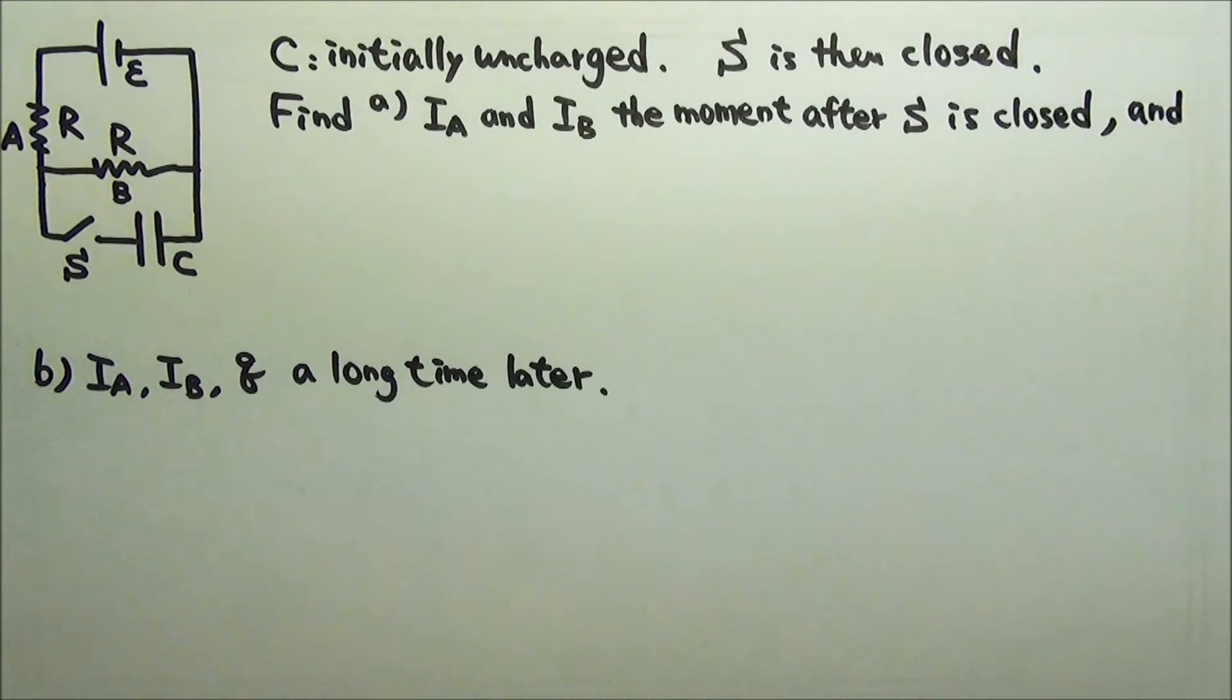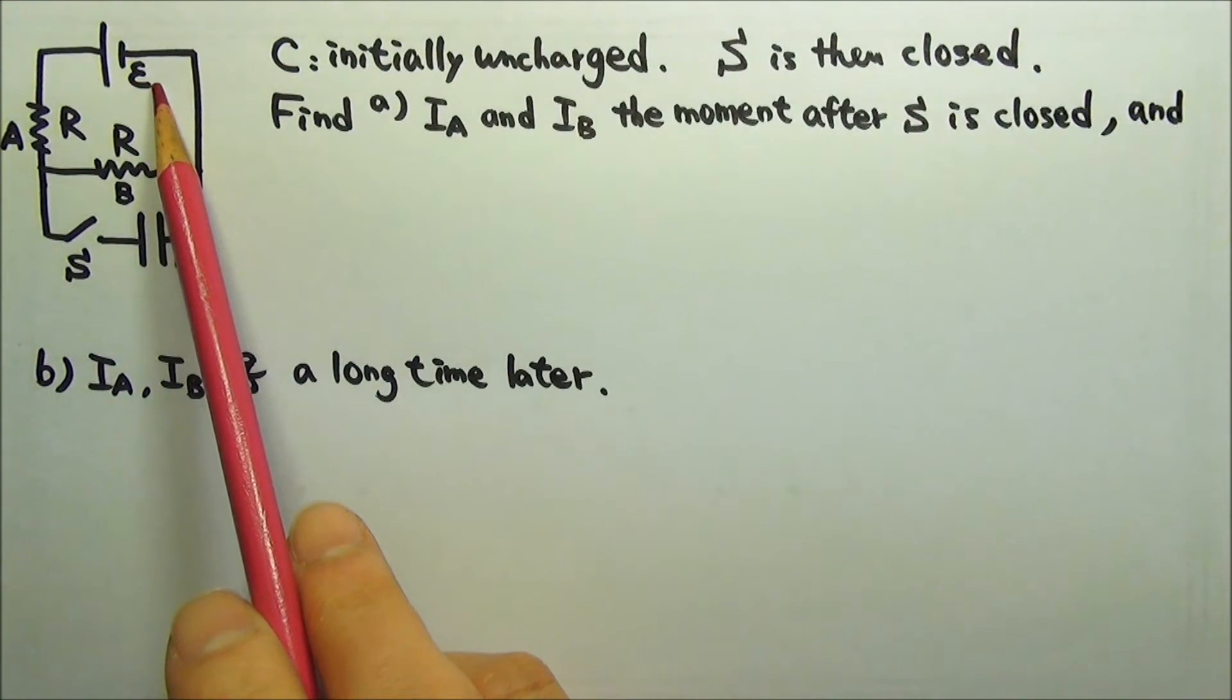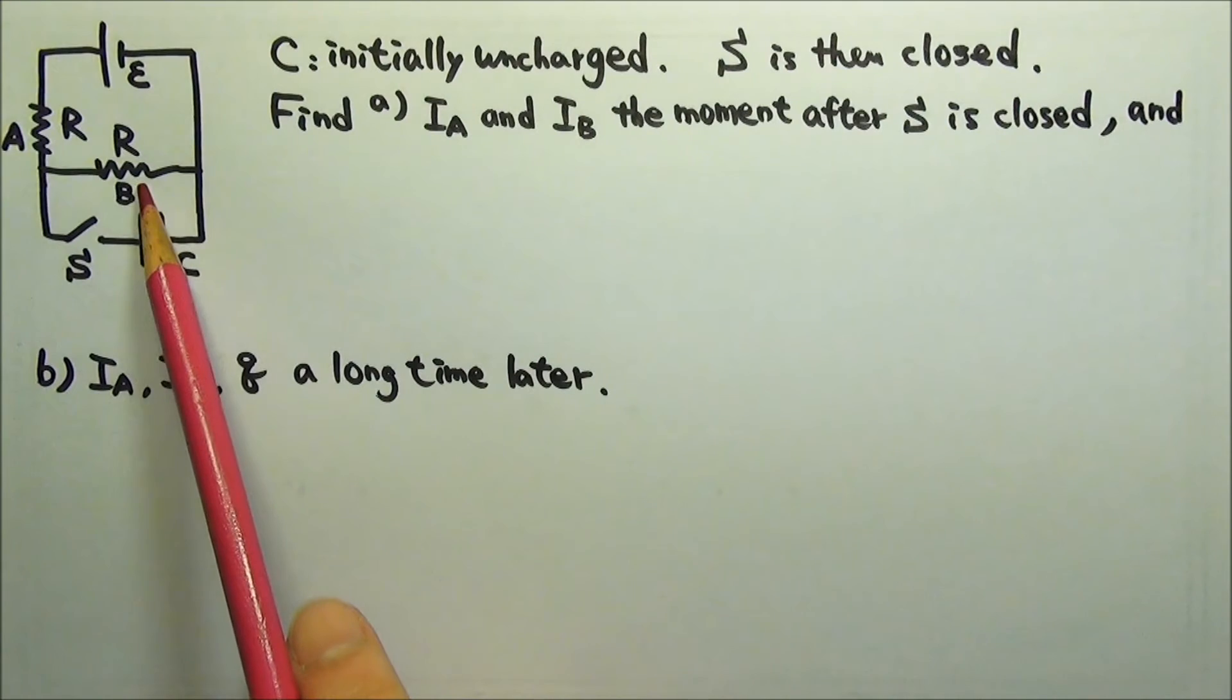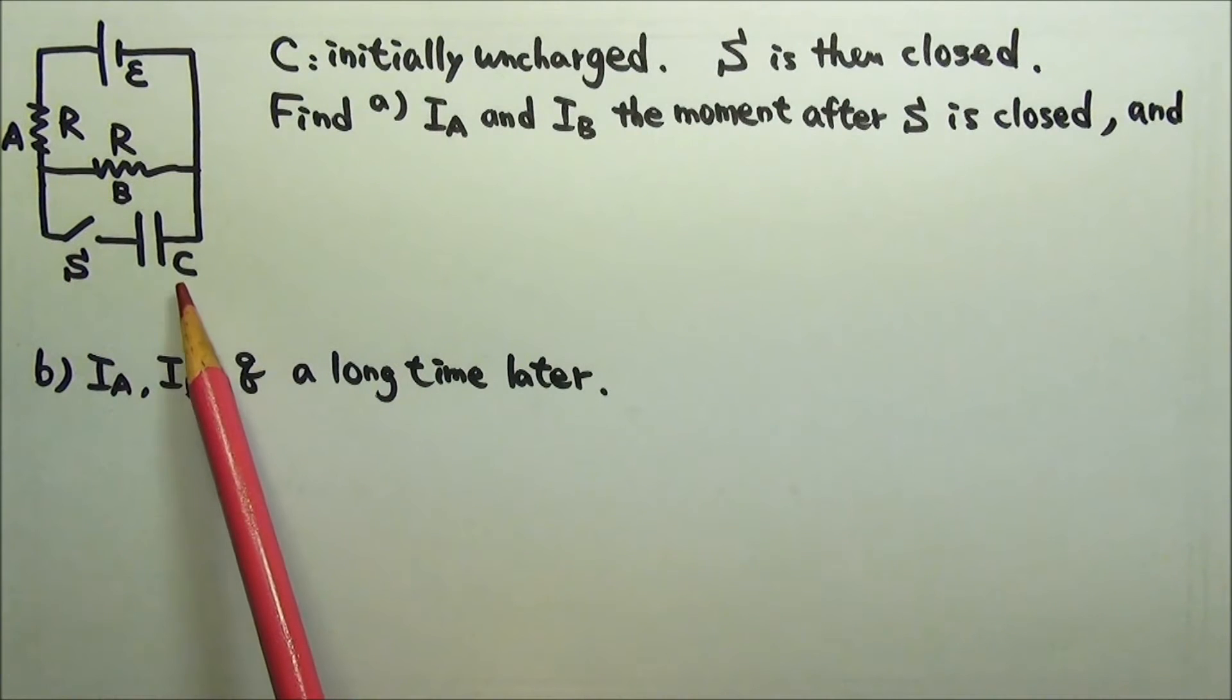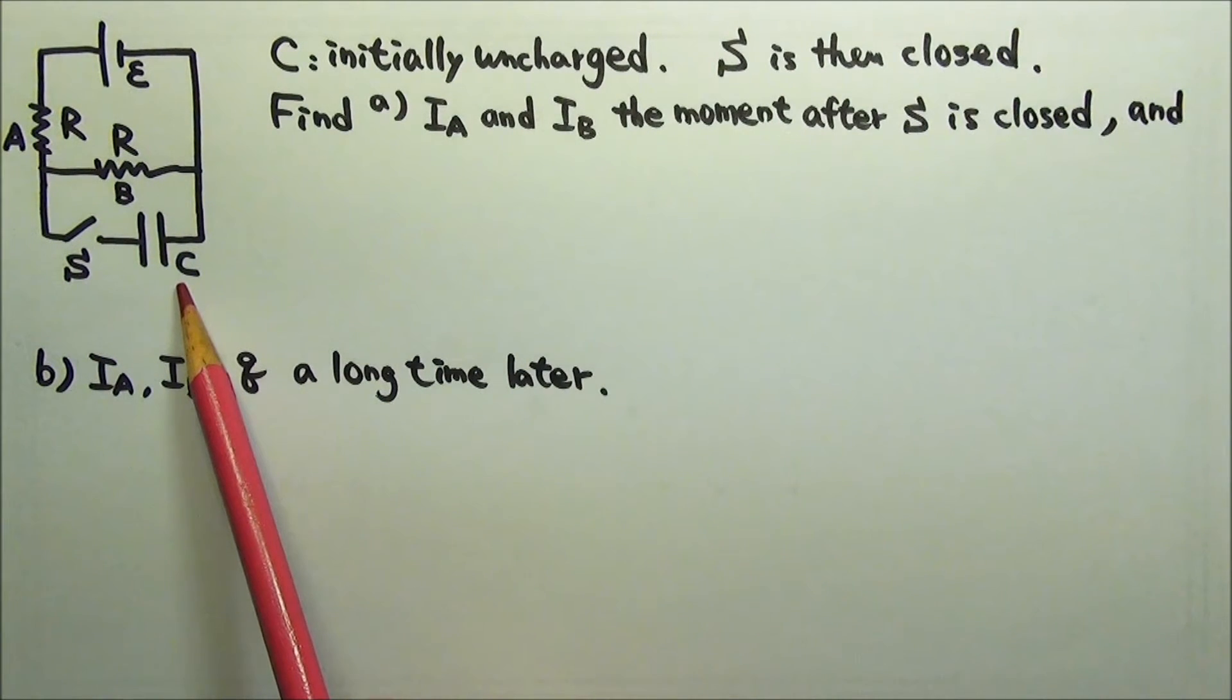In this circuit, we have a battery with EMF E, two identical resistors A and B, each with resistance R, an open switch and an initially uncharged capacitor C.